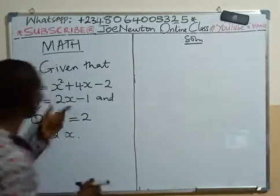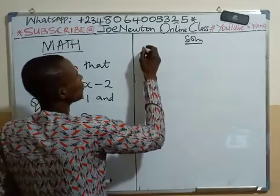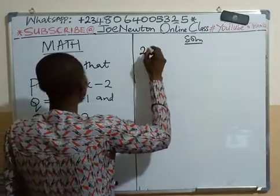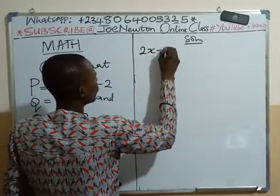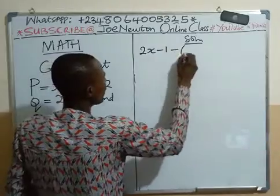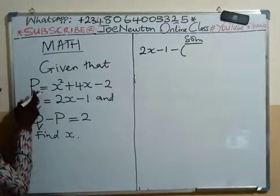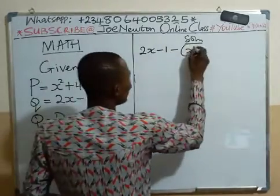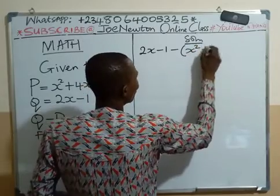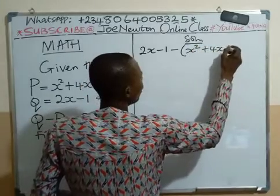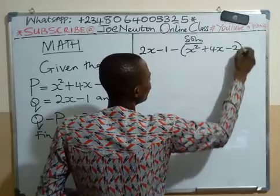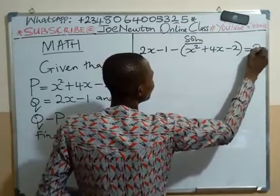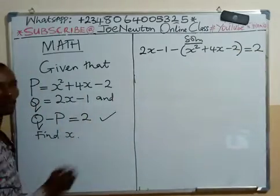First, our Q is this, so we substitute. That will be 2x minus 1 minus bracket open x squared plus 4x minus 2 bracket close, all is equal to 2. This is what we have just done.